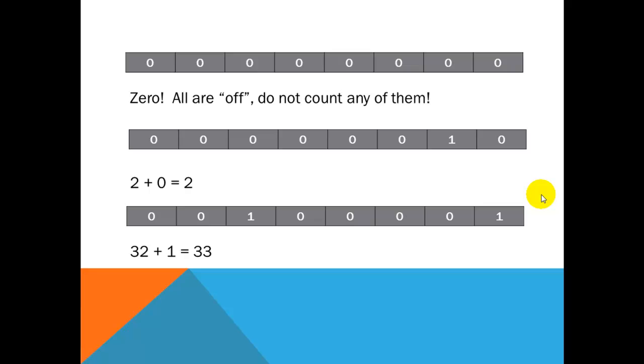Now, here's another one real quickly to look at. Again, zero. If everything is off, do not count any of them. The next one, only the two is on, so you count the two. And, then the last one, you have 32 plus 1, which is going to equal 33.